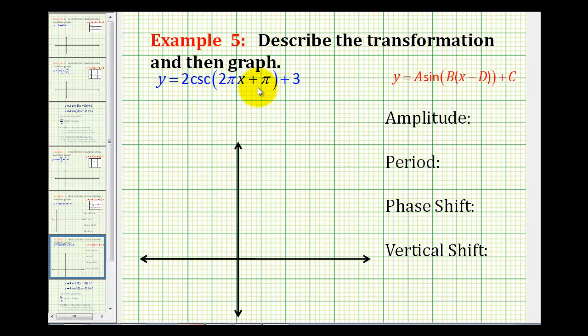Again, the first thing we should recognize is we do have to factor this quantity here in order to fit the form to identify a, b, c, and d. Let's start by doing that. We'll have y equals two cosecant. Now here we're going to factor out two pi. We're left with x plus. If we factor out two pi from pi, we're going to be left with one half plus three.